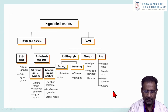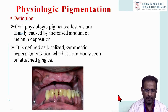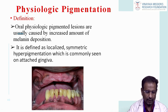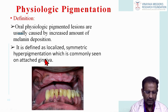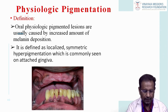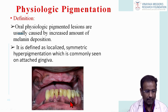Moving to diffuse and bilateral lesions: first is physiological pigmentation, which is not a pathological condition. Oral physiological pigmented lesions are usually caused by an increased amount of melanin deposition, defined as localized symmetric hyperpigmentation commonly seen in the attached gingiva. Some persons have darker colored gingiva — that is a physiological condition and no treatment is needed.